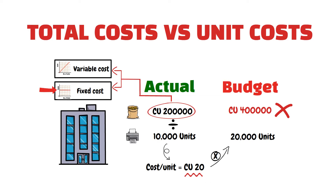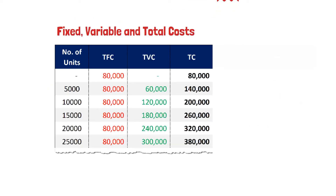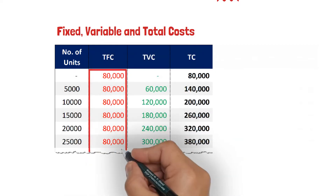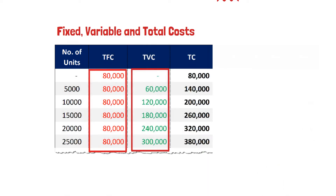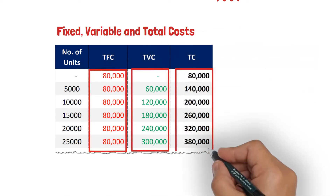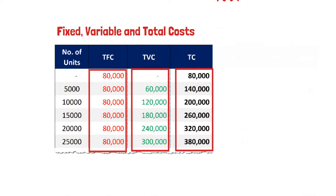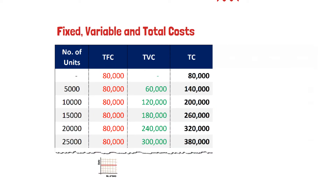So let us look at the total costs. This schedule shows the total fixed costs, total variable costs, and total costs at different levels of production. The fixed costs are constant for the different production levels, and the variable costs increase proportionally with the increase in production.